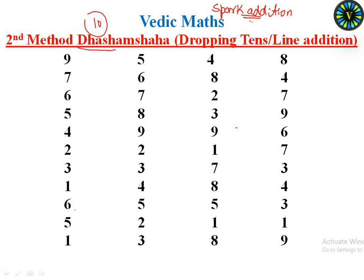We need to count from reverse. So first, 1 is equal to 5. So you have 6 plus 6, that gives you 12. So 12 is nothing but 10 plus 2. When you encounter 10, you drop the 10 and carry it forward.